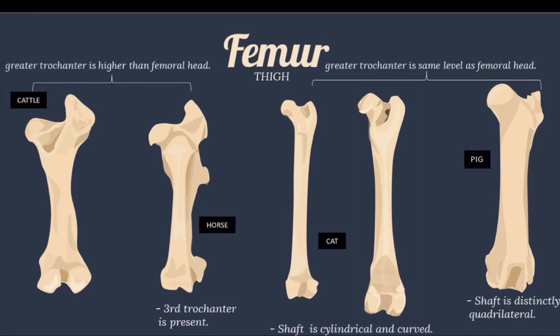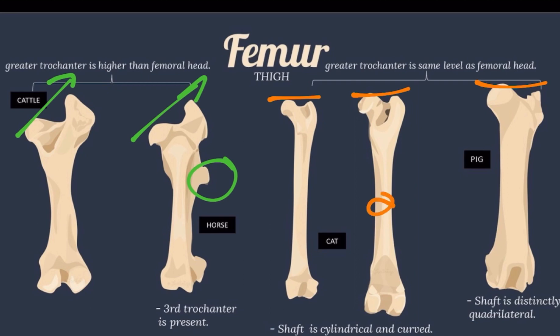Comparing the femur of animals: in cattle and horse, the greater trochanter is higher than the femoral head. The difference between cattle and horse is that in the horse, there is a third trochanter present. In cats, dog, and pig, the greater trochanter is at the same level as the femoral head. In cats and dog, the shaft is cylindrical and curved.